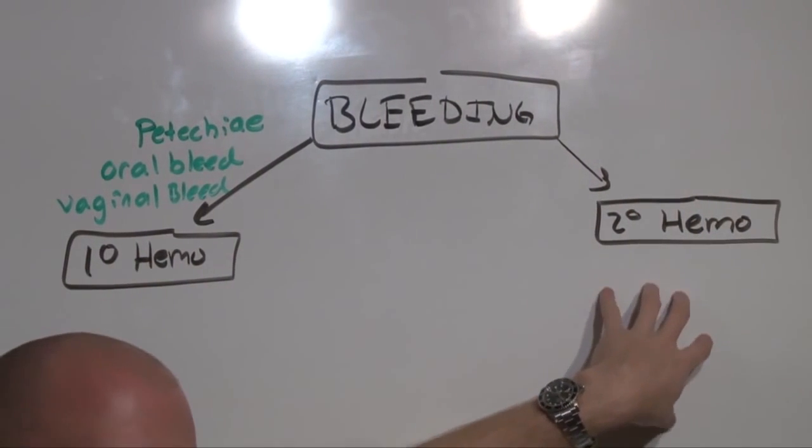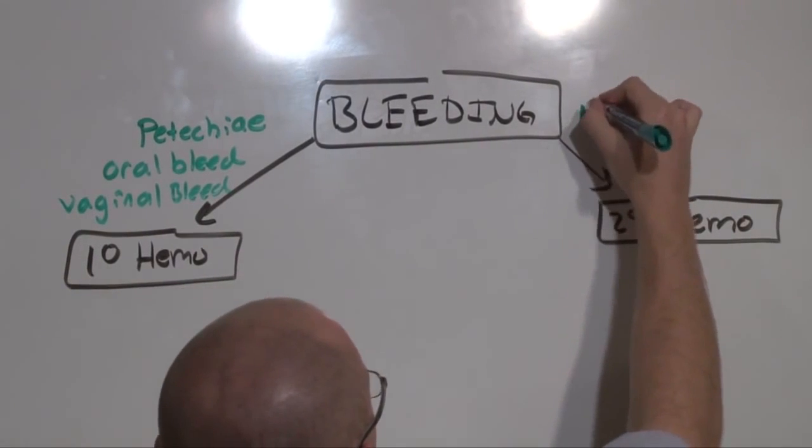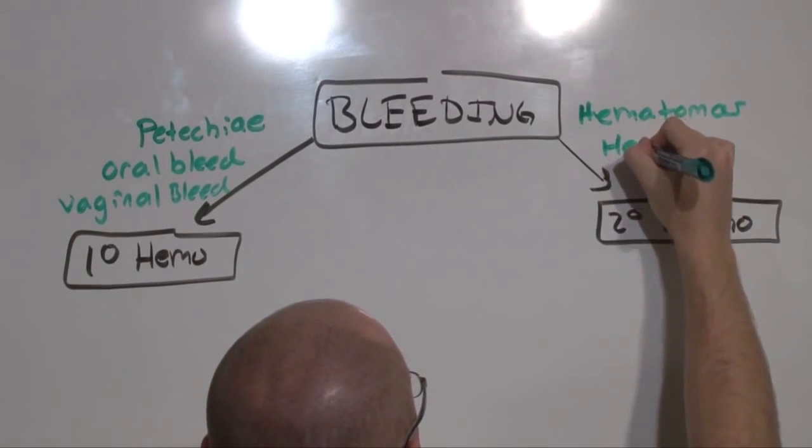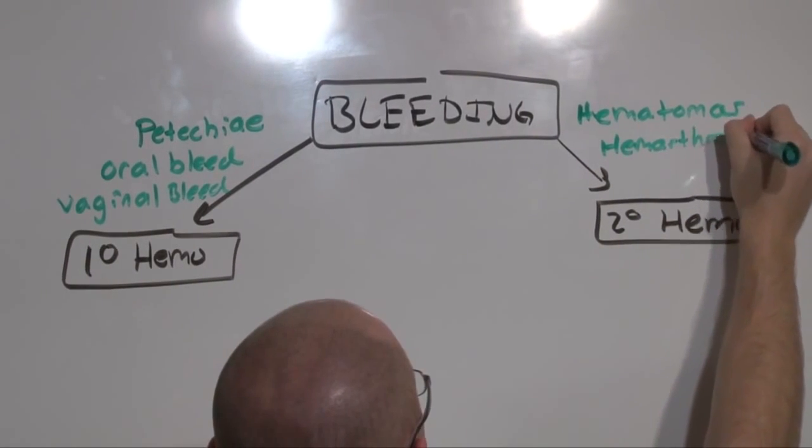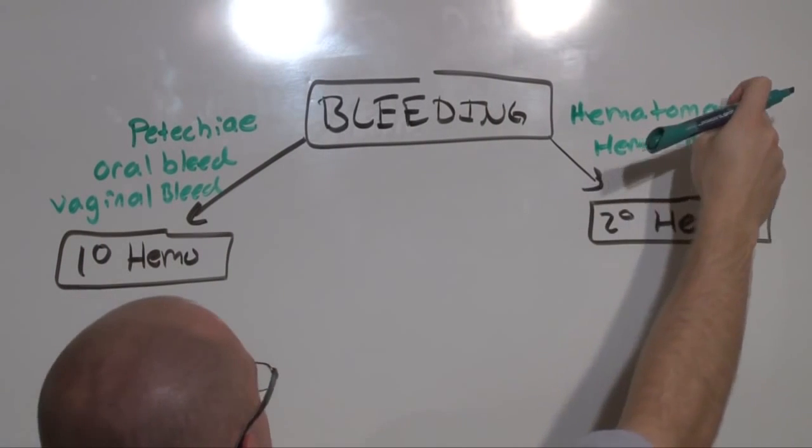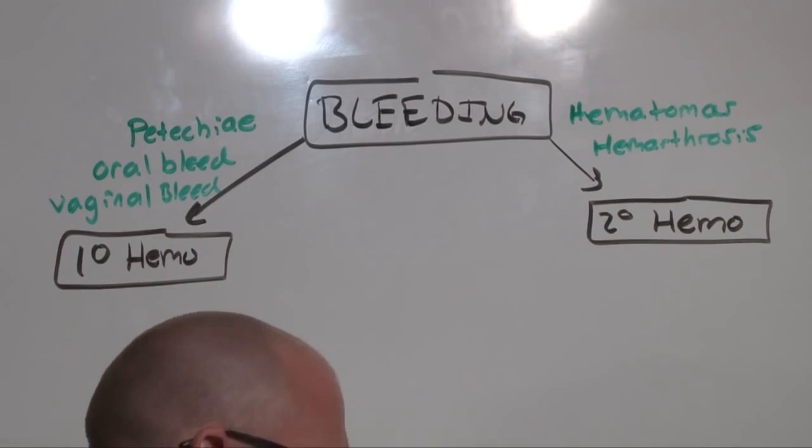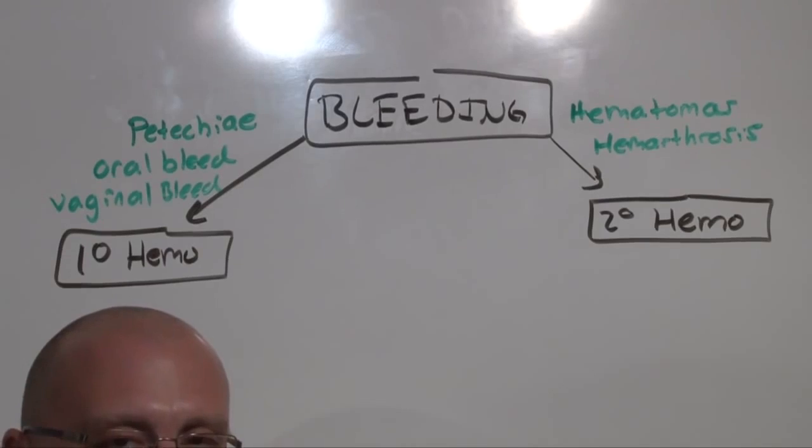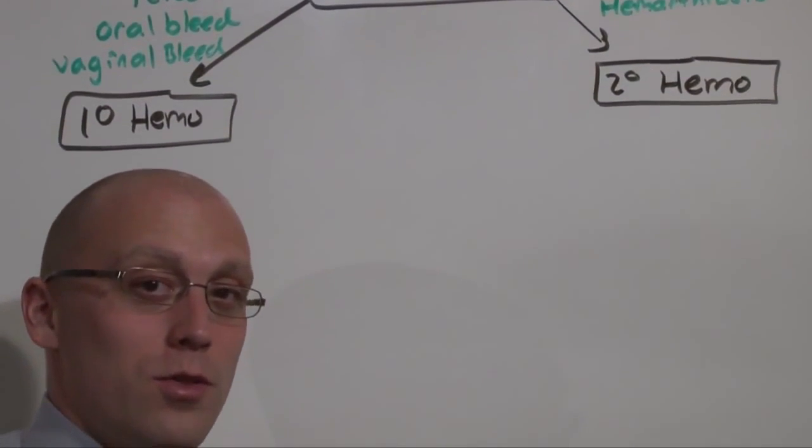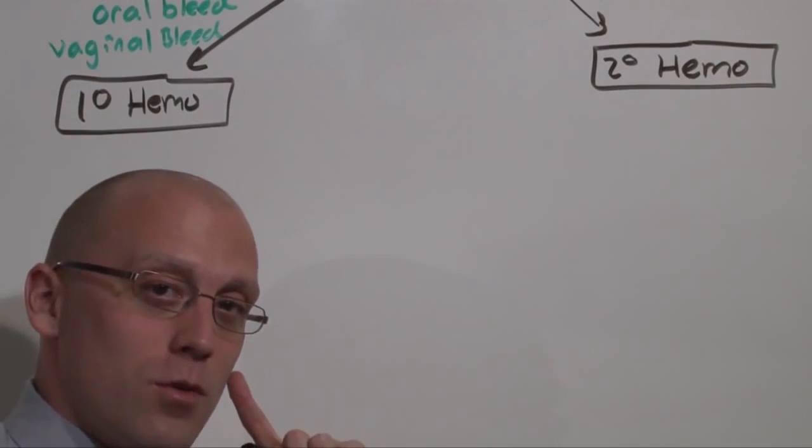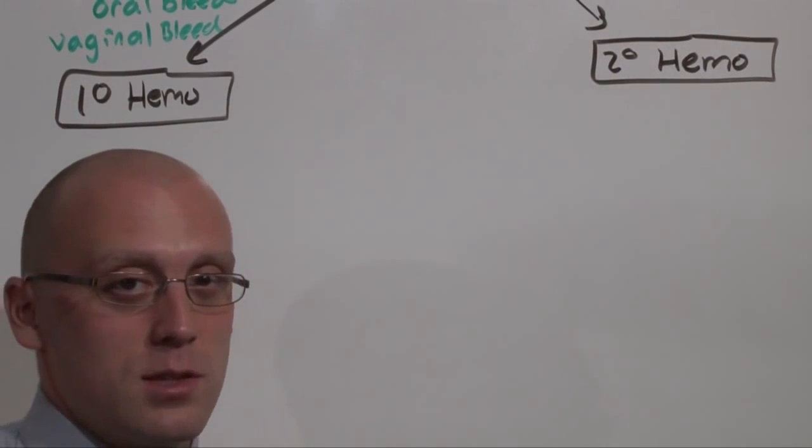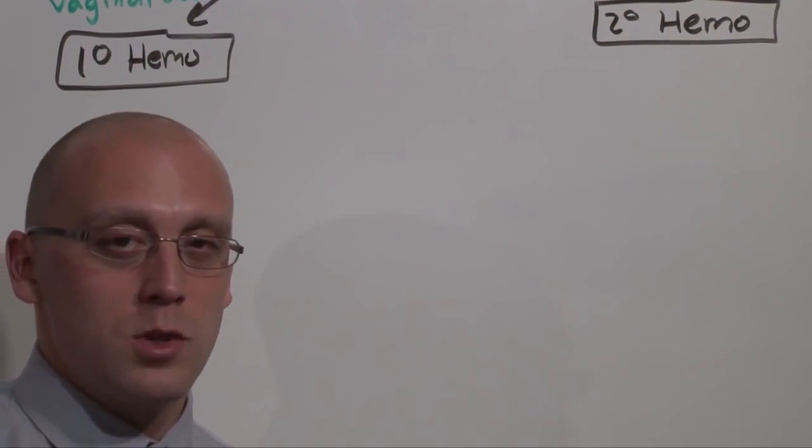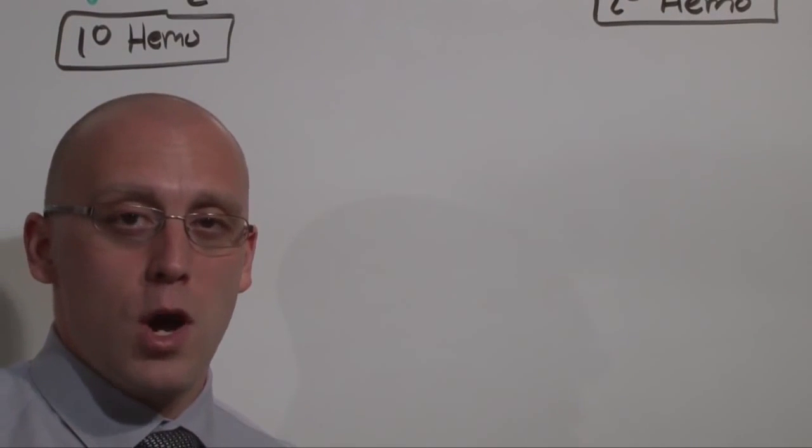Secondary hemostasis is deeper bleeding. These are the patients who are going to have hematomas and hemarthroses. Difficult to miss these. The question comes up all the time, where does epistaxis belong? It's difficult to answer that question because if it is anterior nose, then it's going to be more superficial. But if it's deep in the oral pharynx, it might be secondary hemostasis. So increased bleeding time after surgery or even epistaxis, both of those can kind of be in both directions, which is why it makes sense that people do the next step right off the bat.